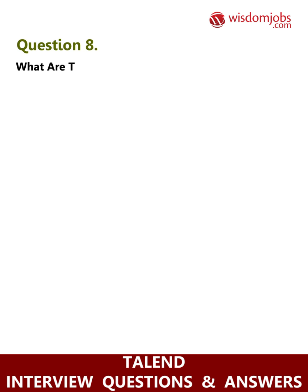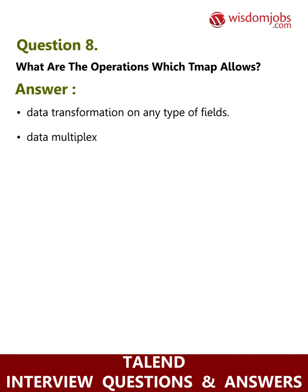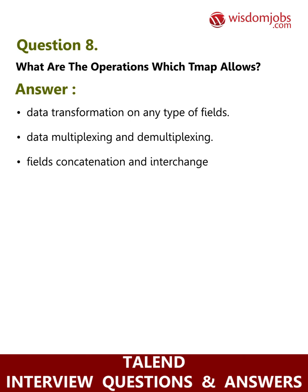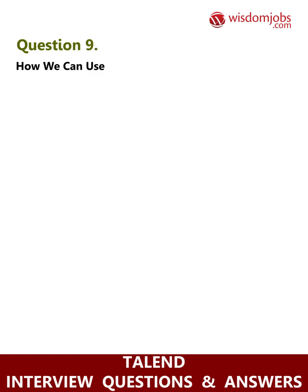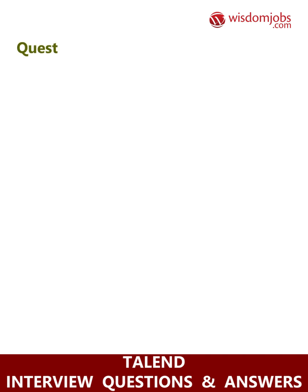Question 8: What are the operations which demap allows? Answer: Data transformation on any type of field, data multiplexing and demultiplexing, fields concatenation and interchange, data rejecting, and field filtering using constraints. Question 9: How can we use an In-Join? Answer: This join is a specific type of join which differentiates itself by the way refusal is performed.